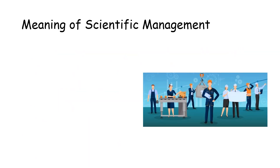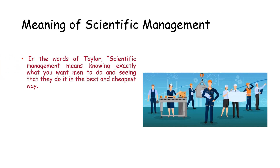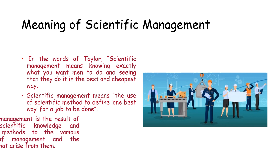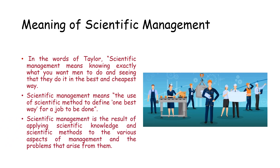Let us understand the meaning of scientific management. In the words of Taylor, scientific management means knowing exactly what you want men to do and seeing that they do it in the best and the cheapest way. Scientific management can also be understood as the use of scientific method to define one best way for a job to be done. In other words, it is a result of applying scientific knowledge and scientific methods to the various aspects of management and the problems that arise from them.